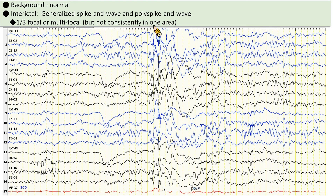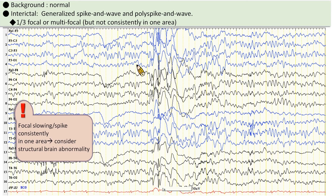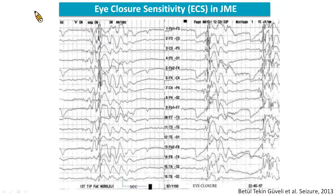Referring to the EEG findings: the background is normal. There is interictal generalized spike-and-wave and polyspikes-and-waves. One-third of cases have focal or multifocal epileptiform discharges, but not consistently in one area. A word of caution: if there is focal slowing or spikes consistently in one area, you should consider a structural brain anomaly.